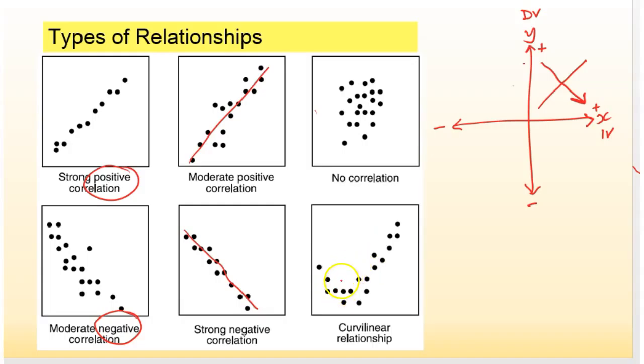The last relationship we're going to look at is this one, which is a curved relationship. Now a curved relationship means that you cannot plot a straight line there accurately at all, and we actually have to look at other mathematical equations to express this relationship.